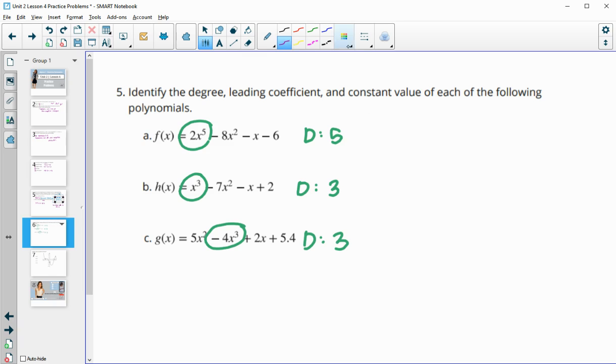Then the leading coefficient is going to be the number in front of that highest degree term - the number in front of the x here. In this case, it's two. In this case, it's a one, so that's 1x³. In this case, it's negative four. Always the number in front of that highest degree term.